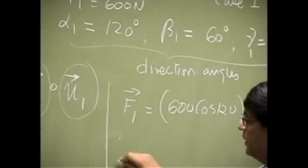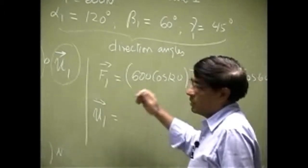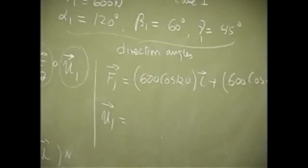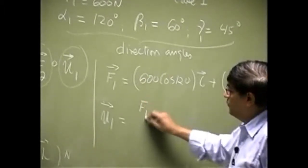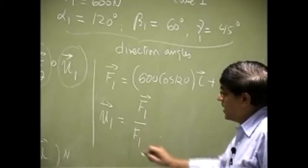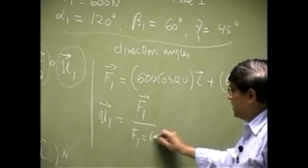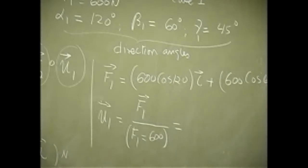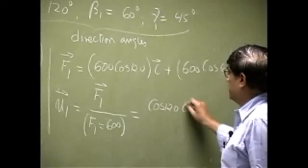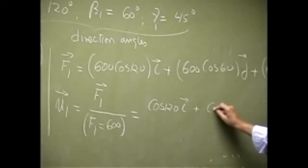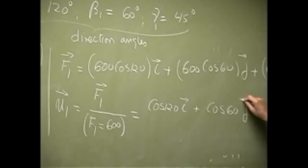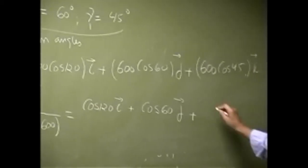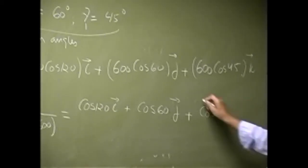But that's not what we need. What we need is U1, a unit vector which is along the force F1. So you're going to look at the force vector and divide it by its own magnitude, and that's 600. So we take this equation and divide the whole thing by its magnitude. So it would be cosine 120i